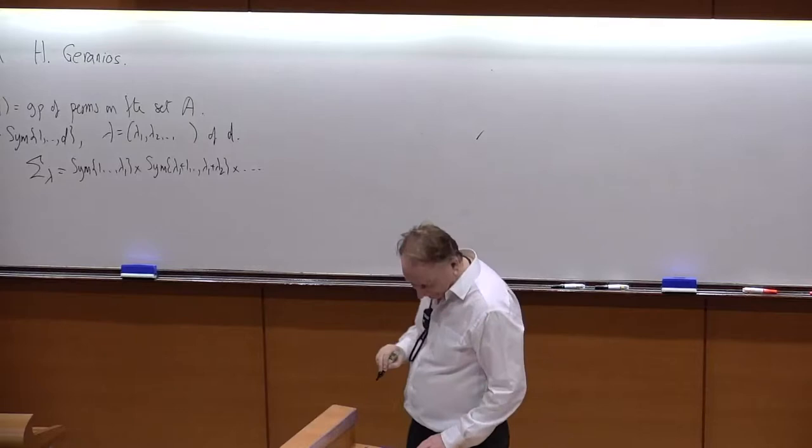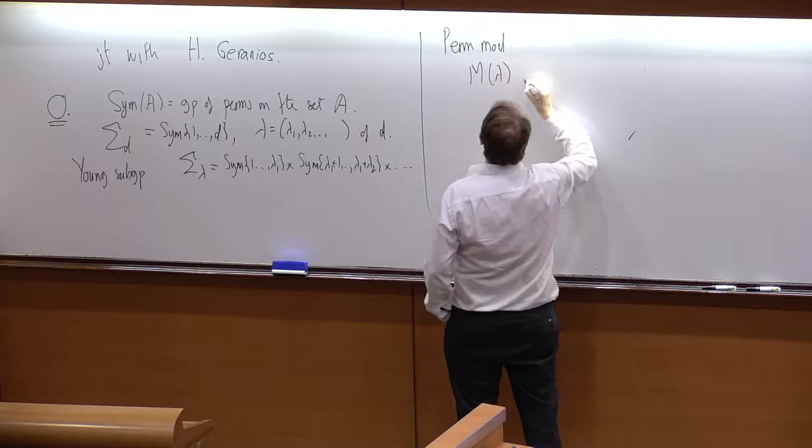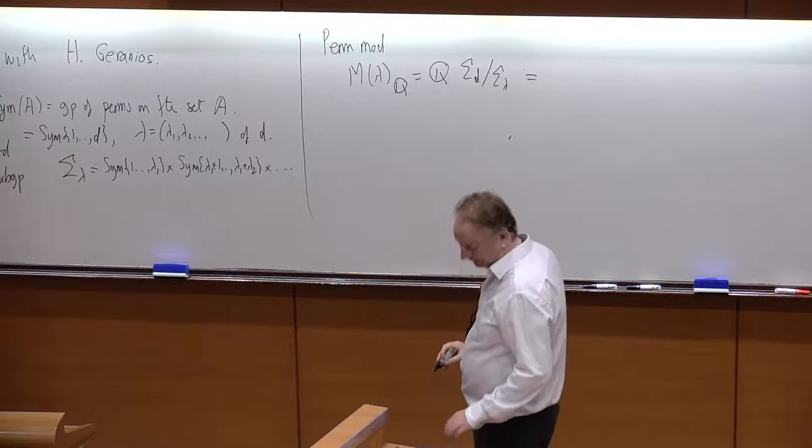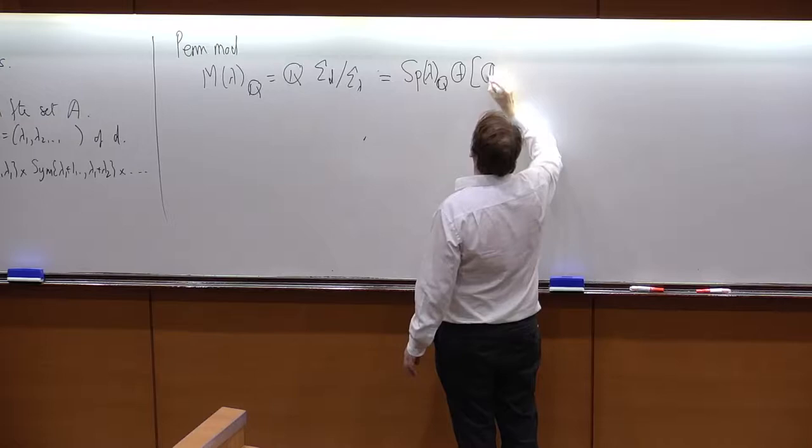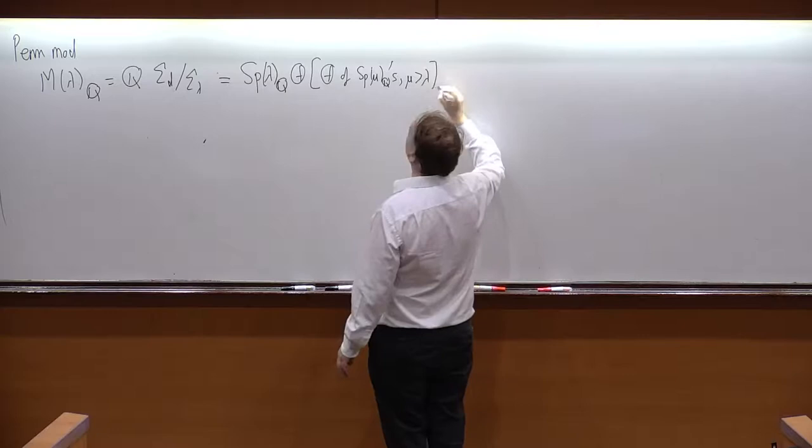So, we have the permutation module, M^λ over Q. And as everyone knows, this decomposes into an irreducible module, and this parametrizes the irreducible, the Specht module S^λ_Q plus the sum of Specht modules with μ greater than λ.